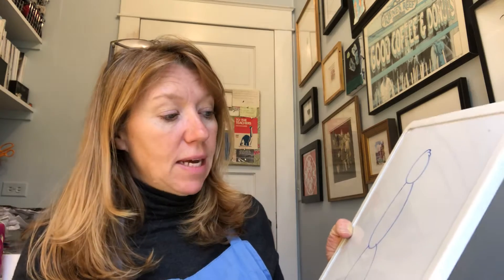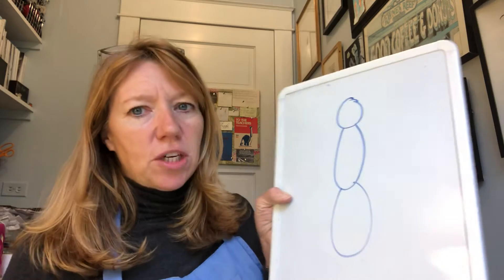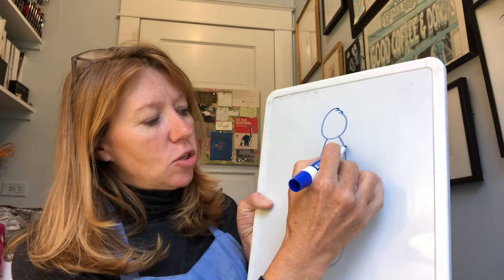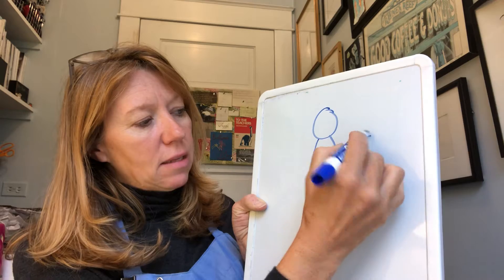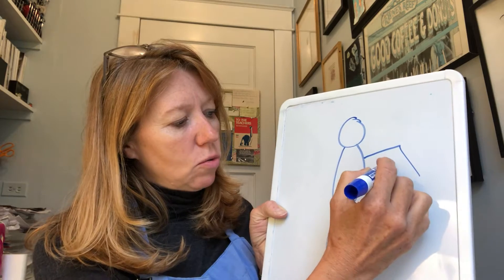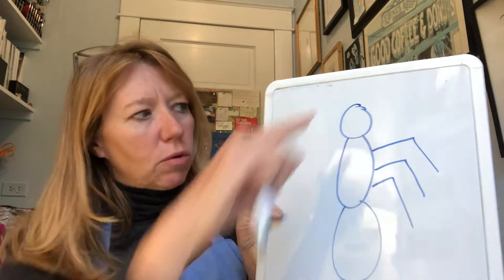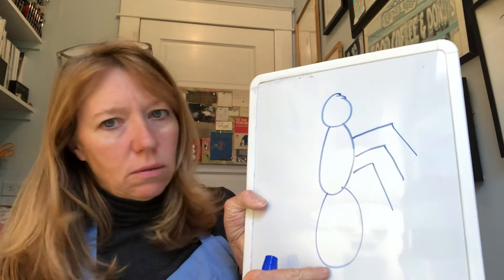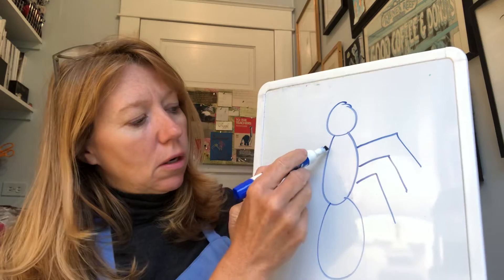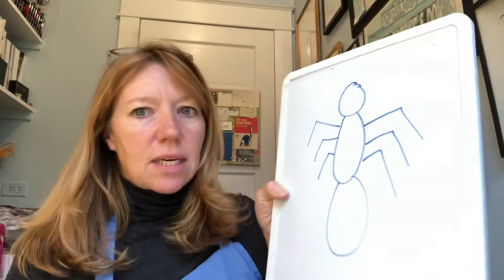Now my bug needs some legs. All insects have six legs. They can be short, they can be long, they can change direction. If I wanted my insect to have legs that started out like this — that's a straight line — but then it bends, kind of like your elbow or your knee. So I'll put three legs on one side, and the other three go on the other side. So now there's my insect with its six legs.